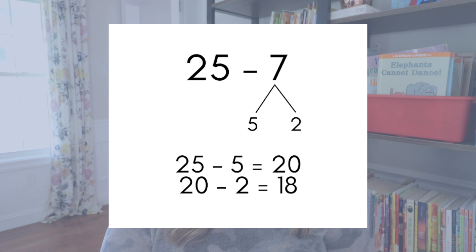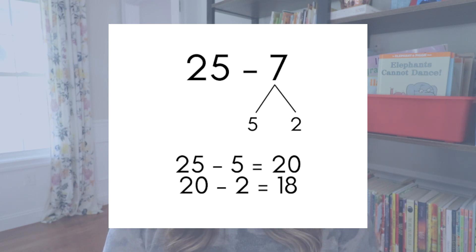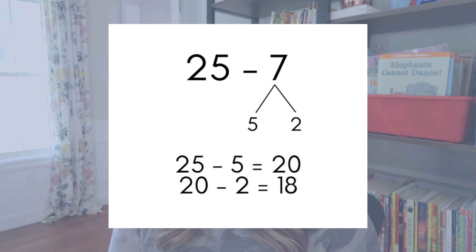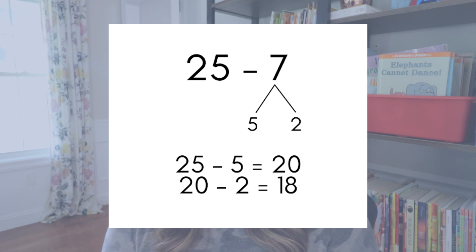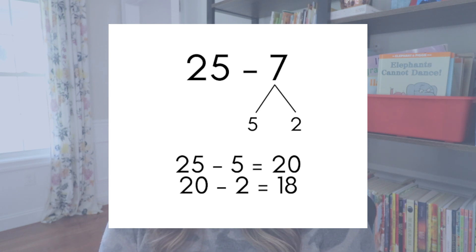Here's another example: 25 minus 7. This might seem like a more difficult problem at first, but if students can recognize they can decompose the 7 into 5 and 2, they can take away 5 from 25 to get a friendly number of 20, and then simply count back 2 to get 18. So 25 minus 7 equals 18.